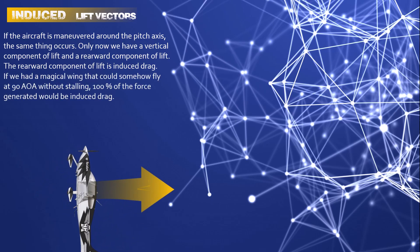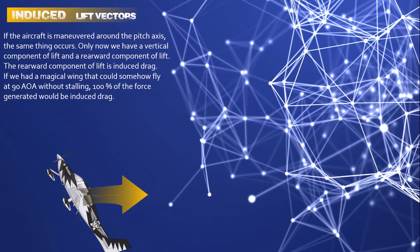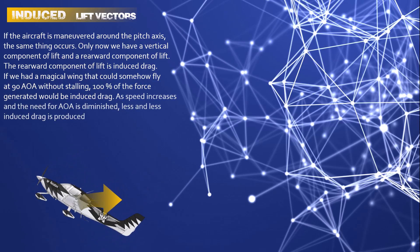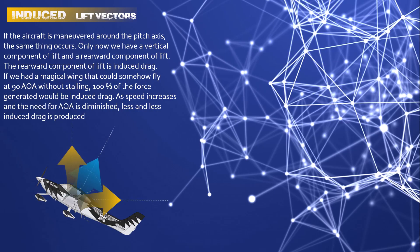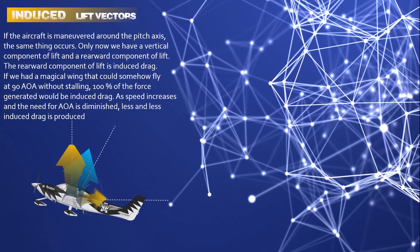If we had a magical wing that could somehow fly at 90 degrees angle of attack without stalling, 100% of the force generated would be induced drag. As speed increases and the need for angle of attack is diminished, less and less induced drag is produced, until zero angle of attack is reached and there is no longer any induced drag created.